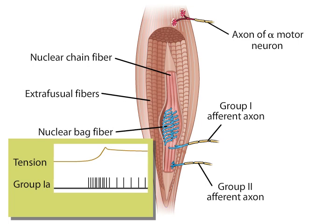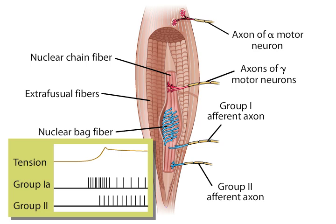Group 1a afferents, which preferentially innervate nuclear bag fibers, respond phasically to small stretches. While group 2 afferents, which innervate both fiber types, signal the level of sustained stretch by firing tonically in proportion to the degree of stretch. Small gamma motor neurons modulate the level of excitability of the muscle spindles.